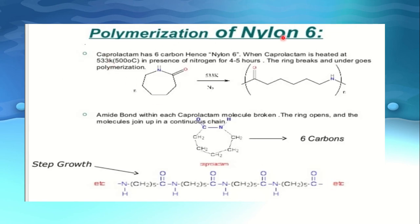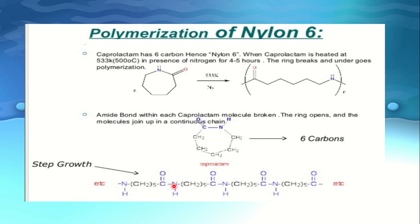Polymerization of nylon 6: caprolactam has 6 carbons, hence nylon 6. When caprolactam is heated at 533 Kelvin in the presence of nitrogen for 4 to 5 hours, the ring breaks and undergoes polymerization. The amide bond within each caprolactam molecule is broken, the ring opens, and the molecules join up in a continuous chain. It is a step-growth process.